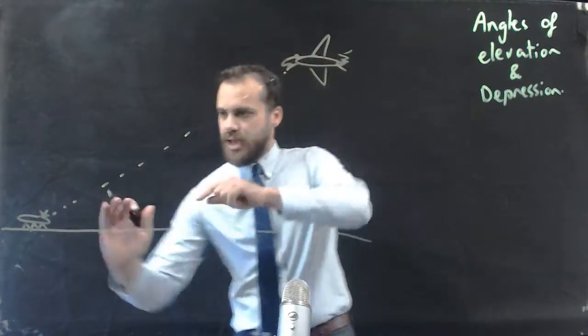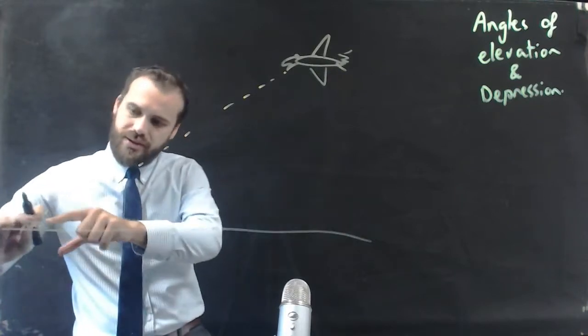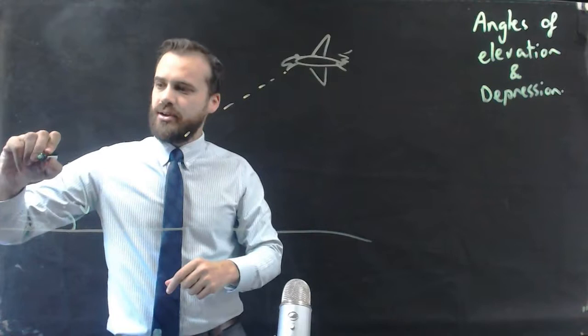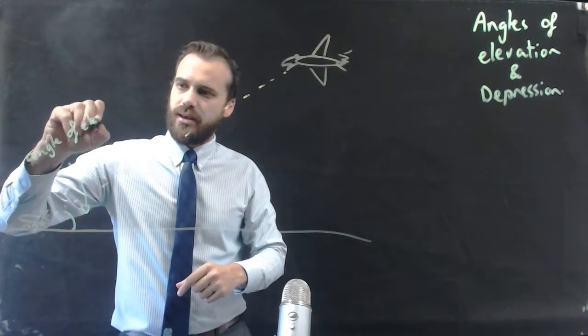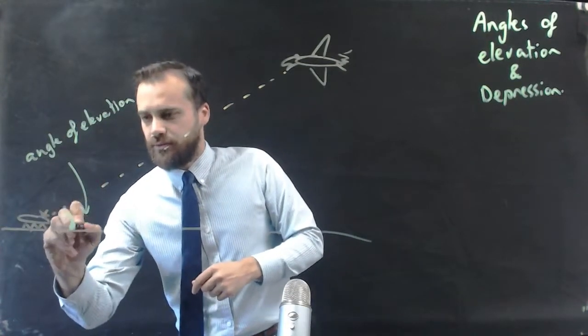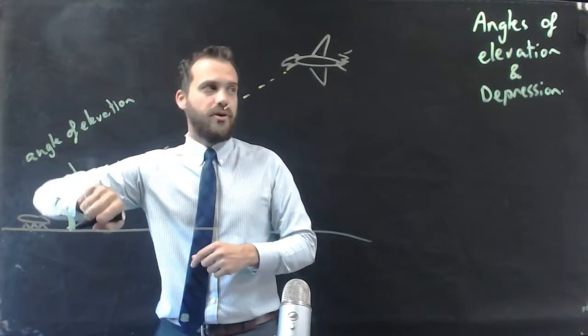Now the angle between the ground and the ant is called the angle of elevation. That angle right there, the angle of elevation.